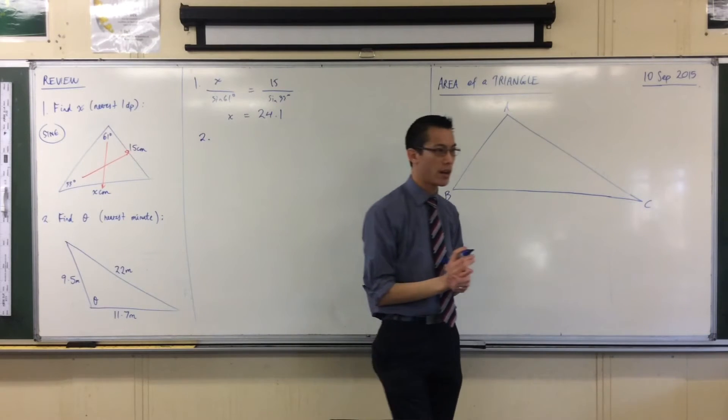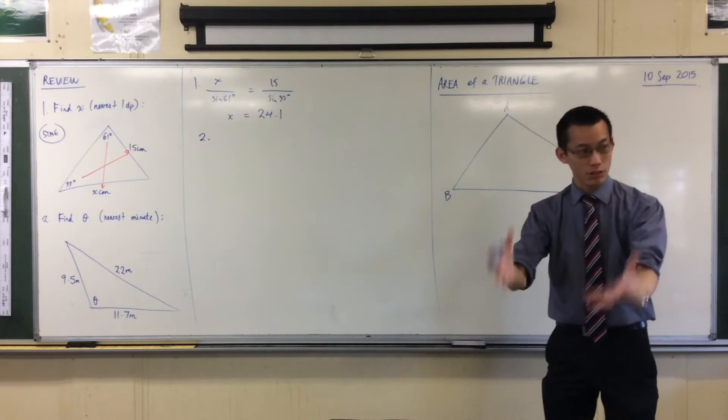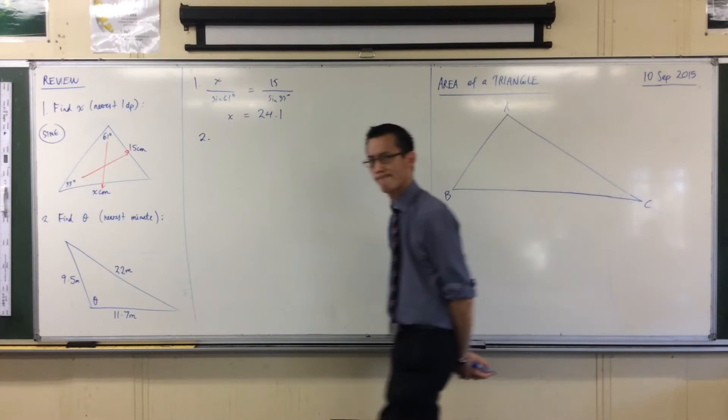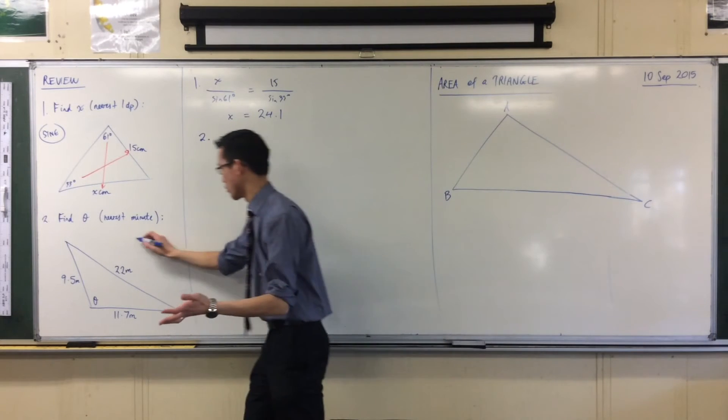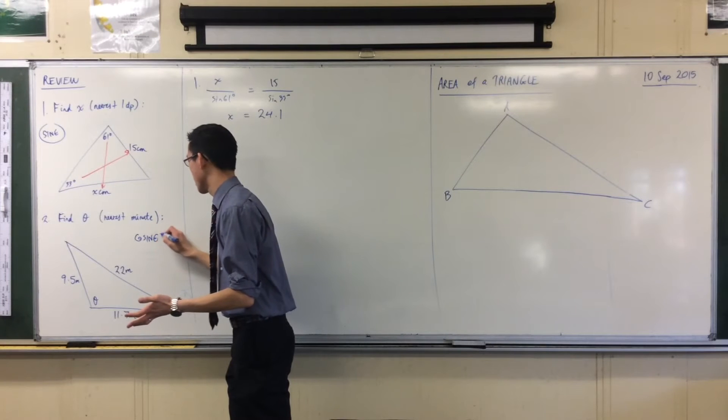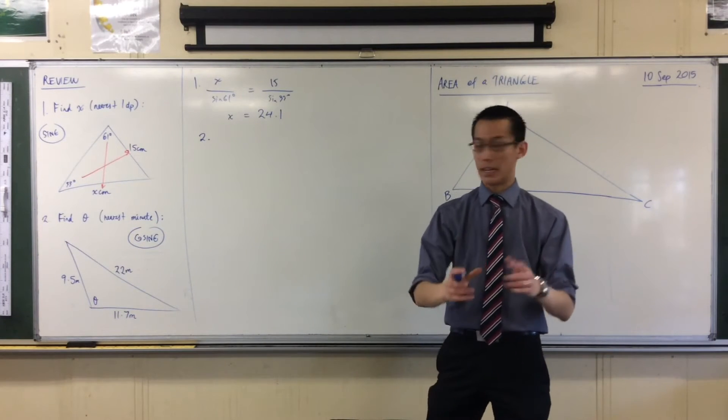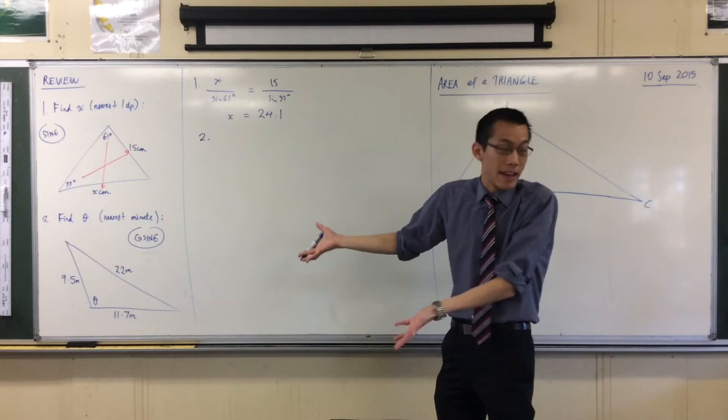Again, I haven't told you what rule or skill you should use. Looking at the information, what does it lead you towards? The cosine rule. We're going to use the cosine rule, right? Because I've got all three sides.